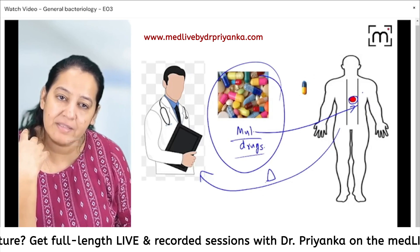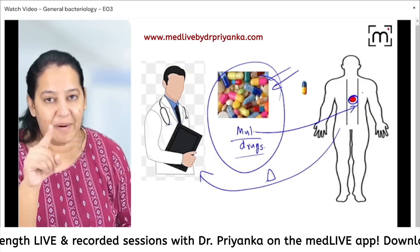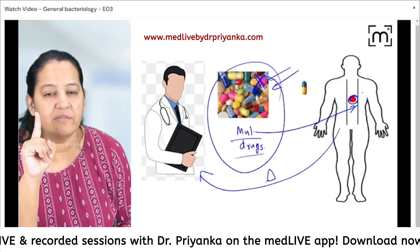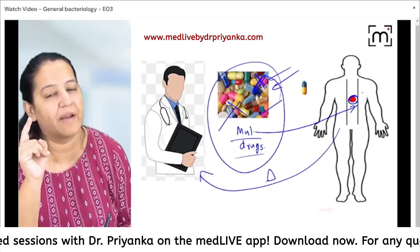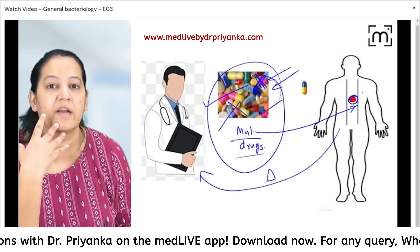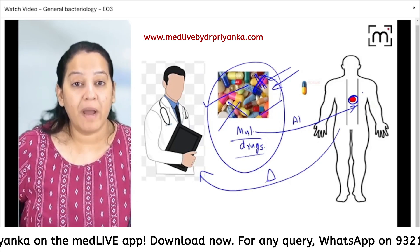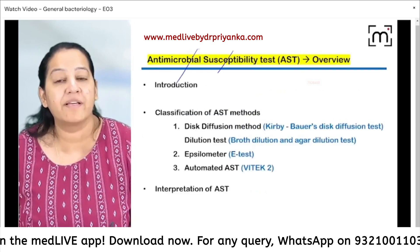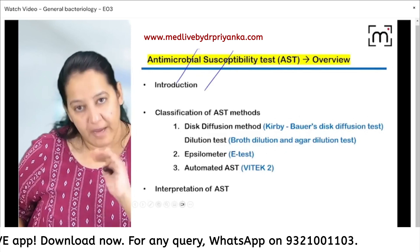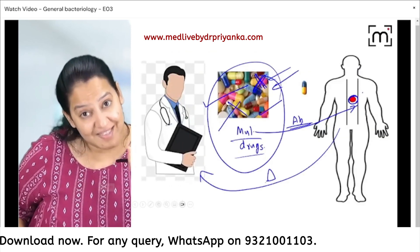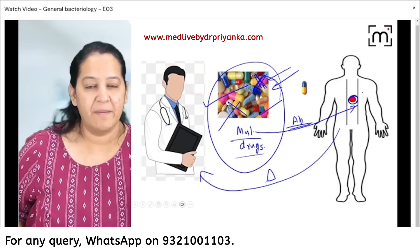Some microorganisms are resistant to some antibiotics. Suppose out of all these drugs, this particular microorganism is resistant to this one — if you give this one, this microorganism will not be killed. But if you give this other one, it will be killed. So before giving the antibiotic to my patient, I want to perform antibiotic susceptibility testing outside the body — that is in vitro — and then give the particular drug which is susceptible for this microorganism.